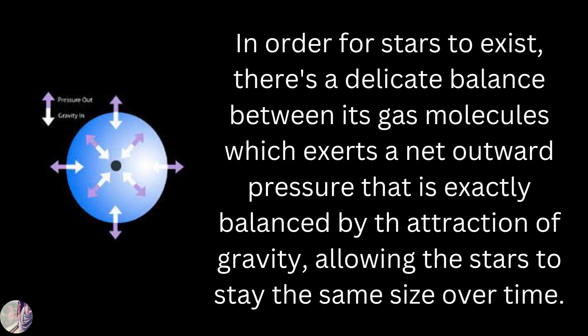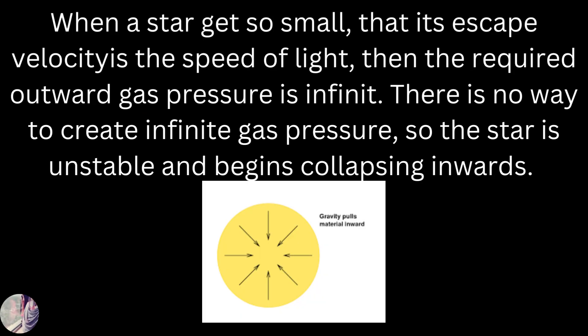In order for stars to exist, there's a delicate balance between its gas molecules, which exerts a net outward pressure that is exactly balanced by the attraction of gravity, allowing the star to stay the same size over time. When a star gets so small that its escape velocity is the speed of light, then the required outward gas pressure is infinite. There is no way to create infinite gas pressure, so the star is unstable and begins collapsing inwards.